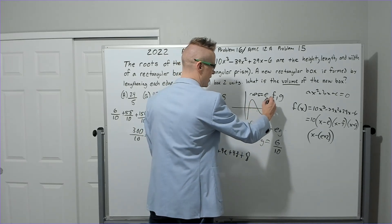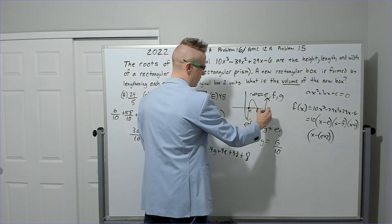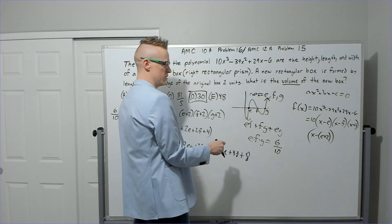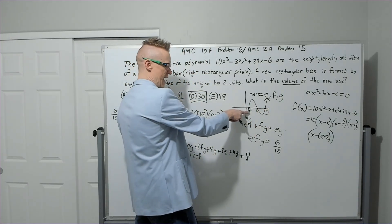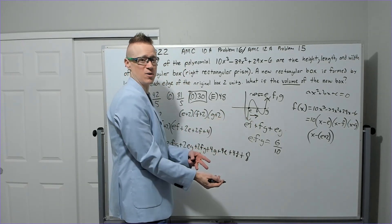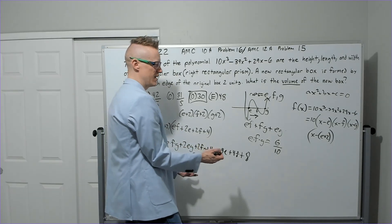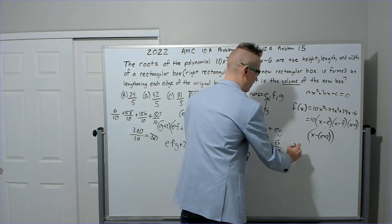So if you were to graph this cubic function, and it's going to look, you know, something like this, right, you'd have root e, root f, and root g. Well, if I just added 2 to all of those, it would be like shifting this graph 2 to the right.